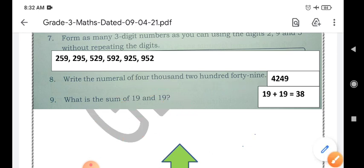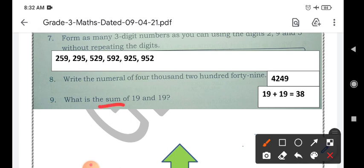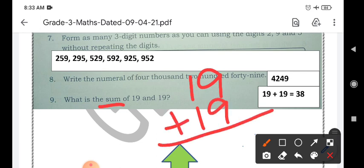Question 9. What is the sum of 19 and 19? Sum means we have to go for addition. We will go for addition here because when we add two addends, we get sum. In this way, 9 plus 9 makes 18. 1 will be carried over to 10s place and 1 plus 1 is 2, 2 plus 1 is 3. So my answer will be like this, 38.